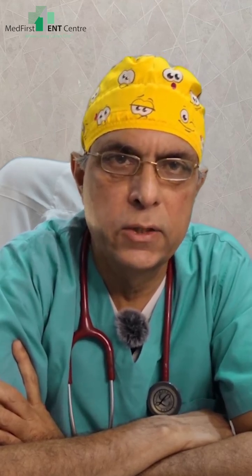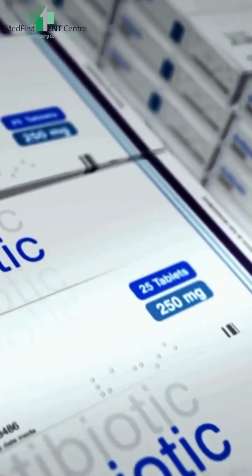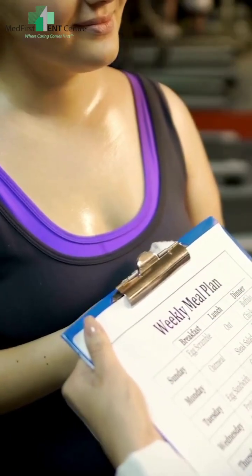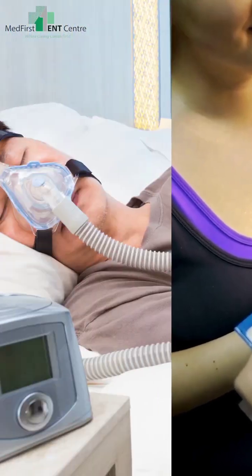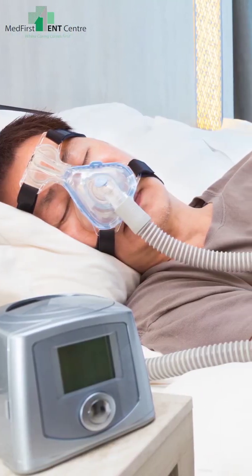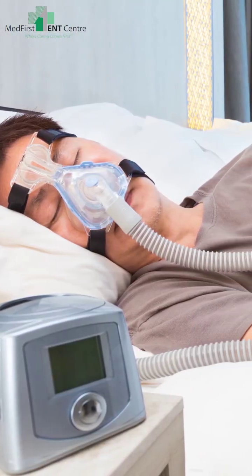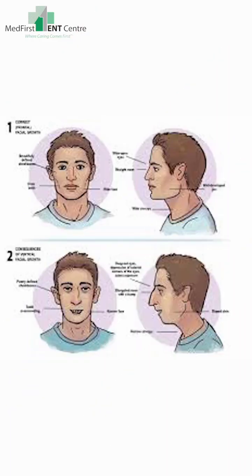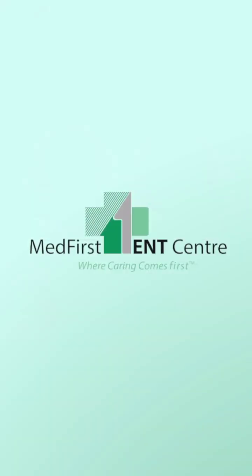While waiting for the surgery, some intervening treatment can be tried, particularly medication like antibiotics for a recent infection, advising a weight loss program, CPAP if required — which can rarely be used sometimes in children — as well as myofunctional therapy, which helps the child to breathe better from the nose and try to prevent mouth breathing.